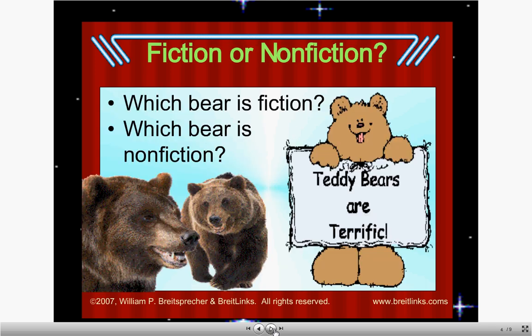So if you look at this picture, it's pretty obvious — pretty evident — that one bear or group of bears is fiction and one or two is non-fiction. The bear on the right is obviously a character drawn and made up, so that would be a fictitious bear — fiction. The two on the left, that's a picture of real bears, so those would be also known as non-fiction.